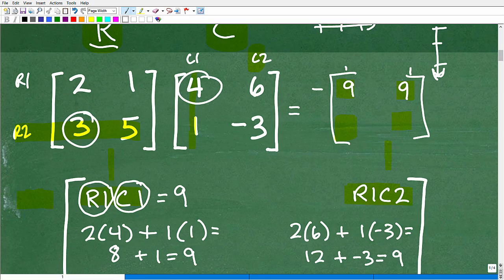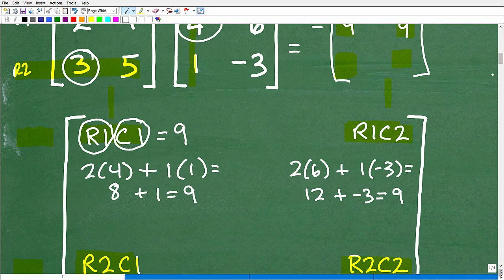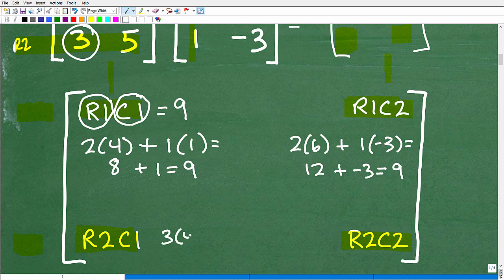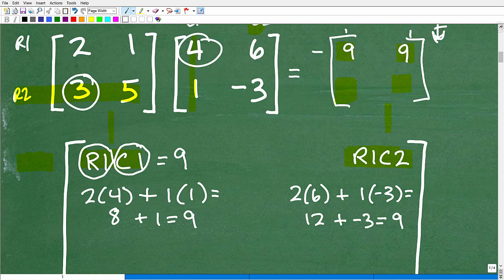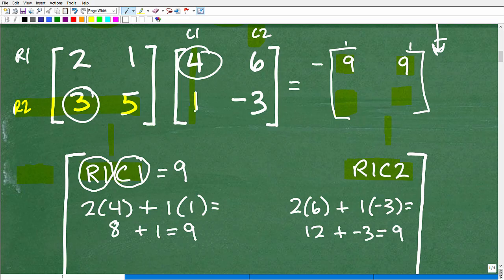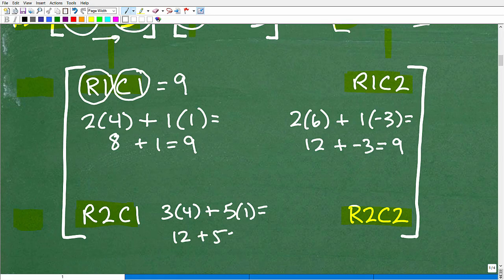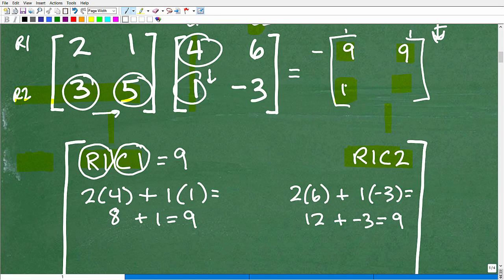We're going to go for row 2, column 1. Row 2 right here, column 1. Let's go ahead and do that. It's going to be 3 times 4. 3 times 4 plus, we're going to walk over, 5 times 1. Remember, we're going down this way, we're going down this way. We're going left to right, we're going down. Plus 5 times 1. That gives us 12 plus 5 or 17. That's the answer right there.